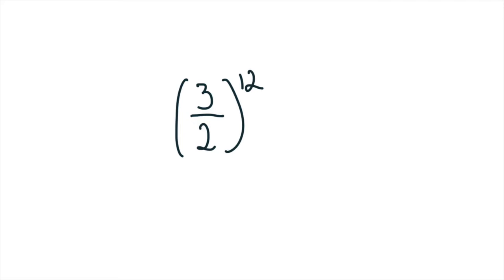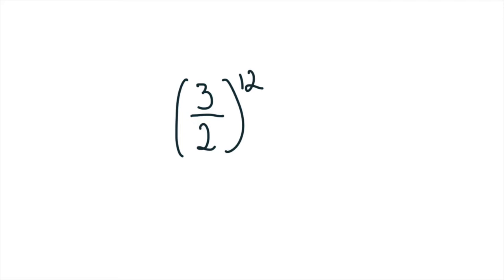But Pythagoras discovered that there was a problem in the system. 12 fifths above each other should be the same as 7 octaves on top of each other, but it's not. It's a little delta, it's a little interval, it's a little difference. And that difference is called a Pythagorean comma.